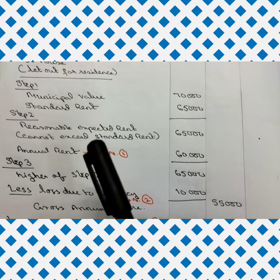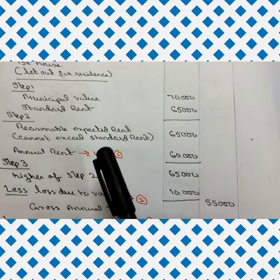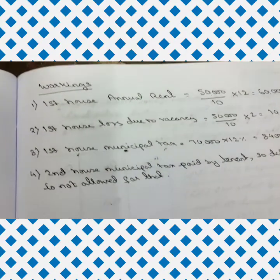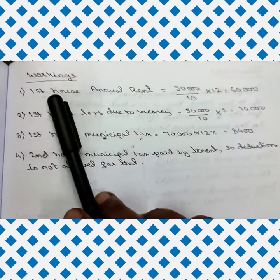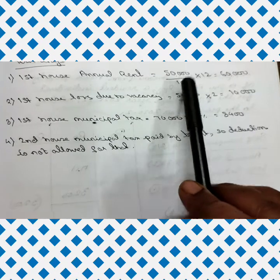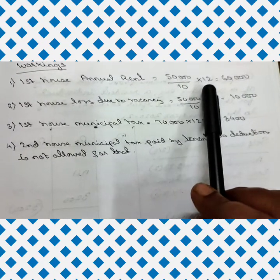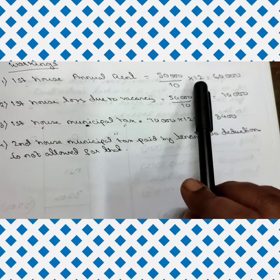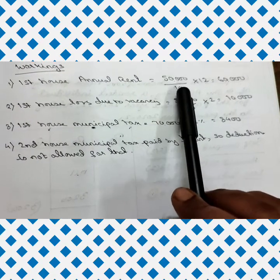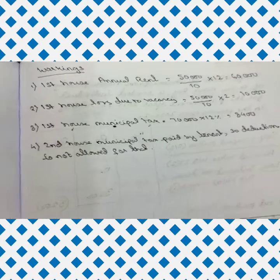Working note for annual rent of house one: rent received is 50,000 for 10 months due to the two-month vacancy period. To convert to annual rent for 12 months: 50,000 divided by 10, multiplied by 12, equals 60,000. So the annual rent is 60,000.